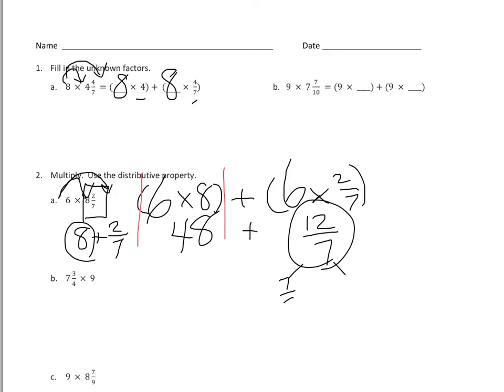If they take out one whole, or 7 sevenths, they're left with 5 sevenths. So then they have these numbers that they're going to combine to find the answer. So it's 48 for the 6 copies of 8. It's going to be 1 whole and 5 sevenths to represent the 12 sevenths that they got when they did 6 times 2 sevenths.